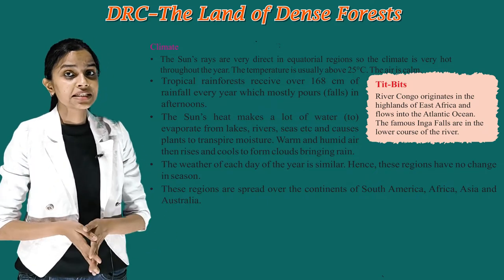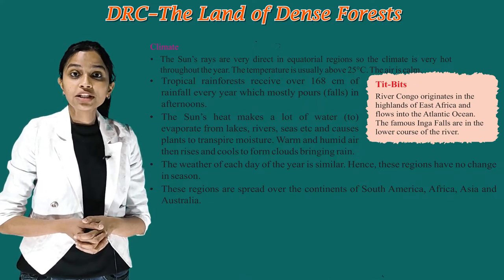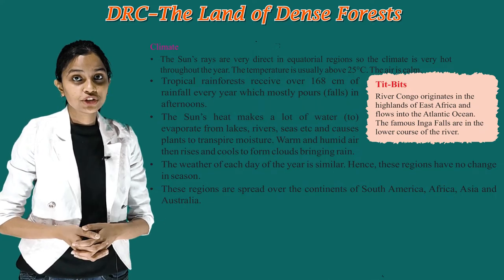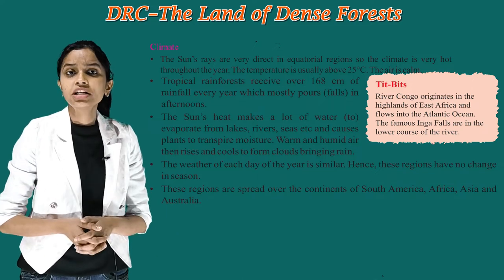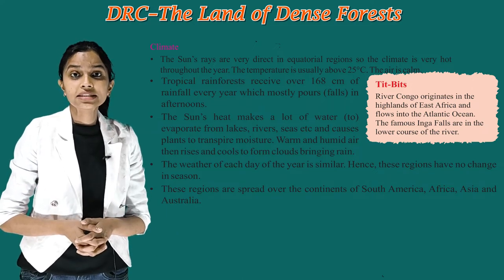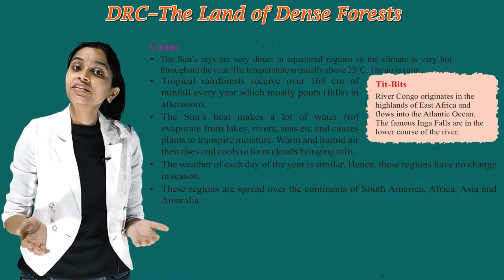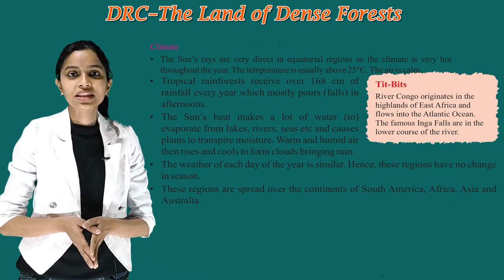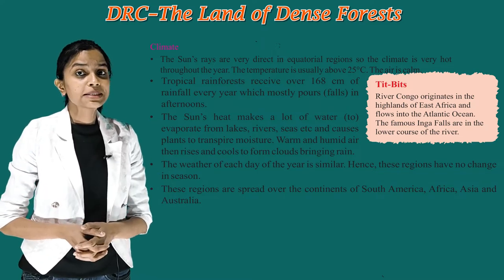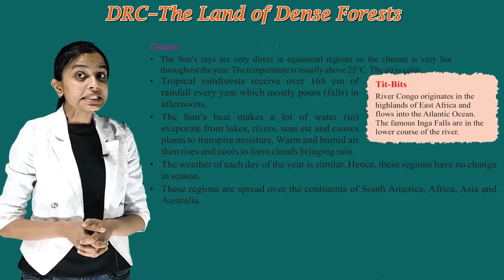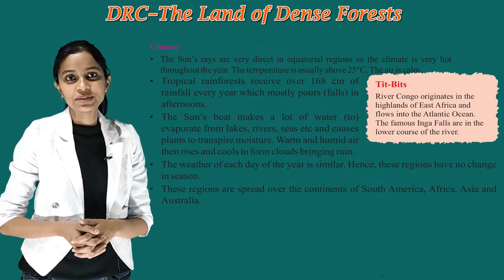rivers, seas, etc., and causes plants to transpire moisture. Warm and humid air then rises and cools to form clouds, bringing rain. The weather of each day of the year is similar. Hence, these regions have no change in season.